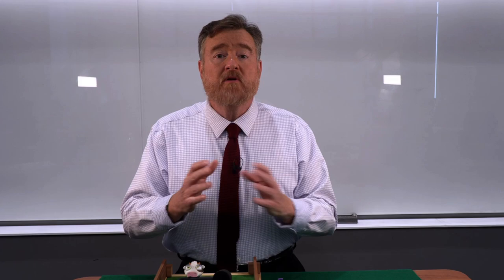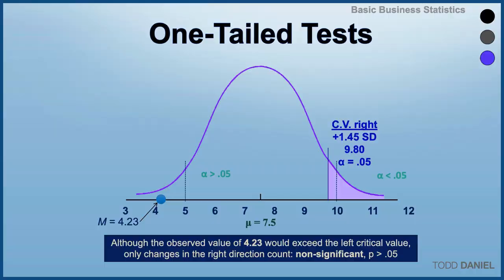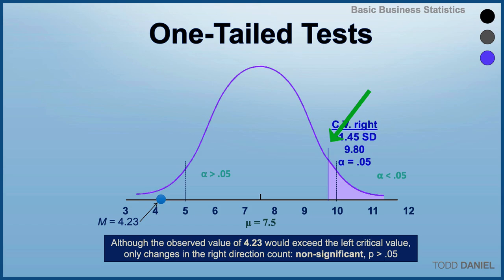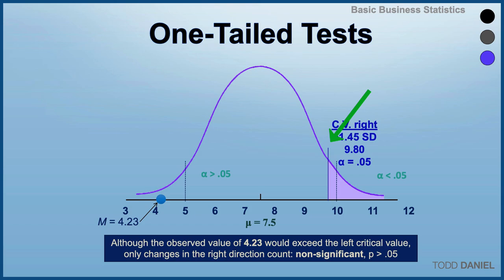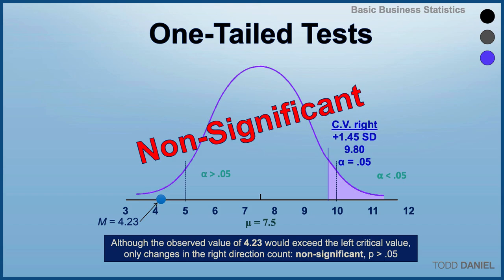Before that, let me say a few words about interpreting a one-tailed test. In this example, dotted lines indicate where the critical value for a two-tailed test would be. However, we are doing a one-tailed test to the right, where our critical value would be a mean of 9.8. The test value is a mean of 4.23, which would be over the left fence for a two-tailed test — but we're doing a one-tailed test to the right. For a one-tailed test, the change in the mean must be in the direction predicted in order to be significant. This drug was supposed to increase alertness but instead decreased it, so the test is non-significant.